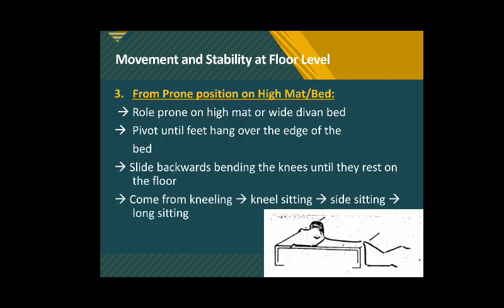For persons who are not able to sit erect without support, they can come to the mat or bed from a higher level by rolling from supine to prone. The person gradually pivots until the feet hang over the edge of the bed, then slides backwards and bends the knees until they rest on the floor. The sequence is: kneeling, to kneel sitting, to side sitting, and then to long sitting.